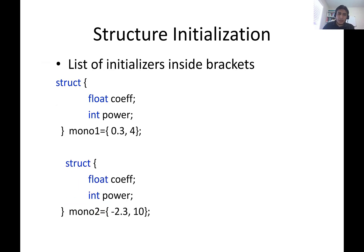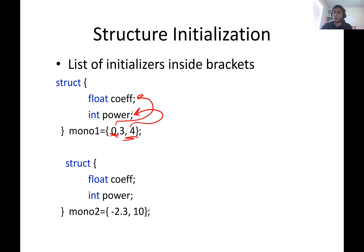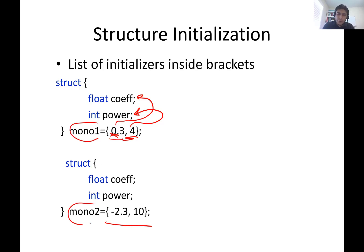One way to initialize a structure is to assign initial values — the first value goes to the first member, the second to the second, and so on. The assignment happens in order, similar to declaring and initializing an array. You can also define two different structures, like Mono1 and Mono2, which are of the same type but different objects.